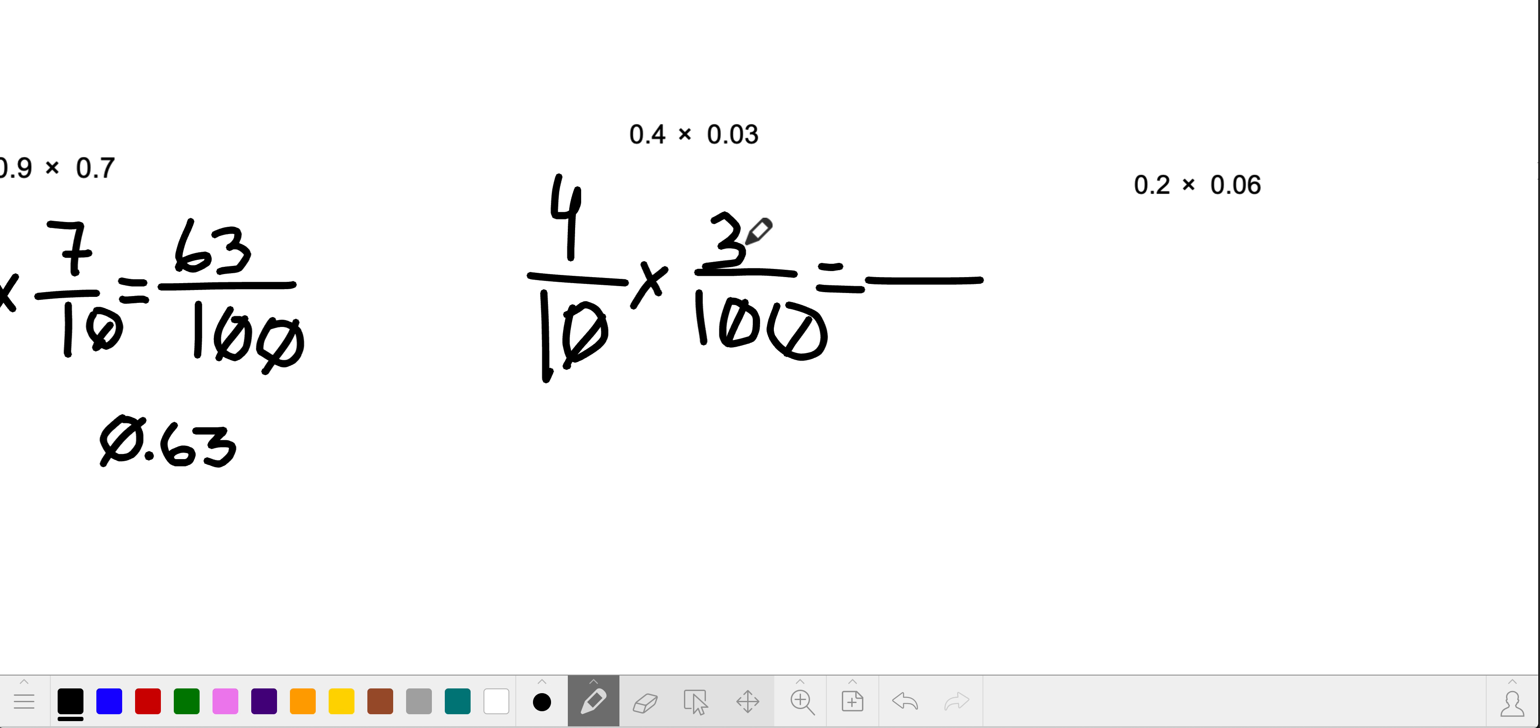And so we get, the numerator, we get 4 times 3, which gives us 12, and then 10 times 100, which gives us 1,000. So to read this properly, we say 12 thousandths, and to write that, it's going to be 0.012.